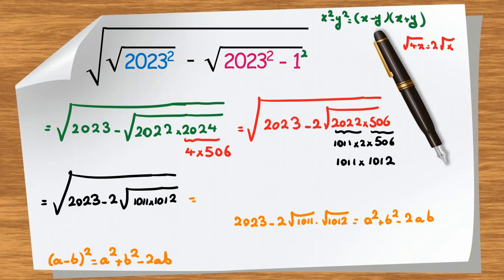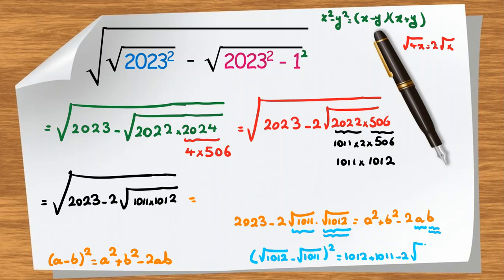Let's check: if we compute the square root of 1012 minus the square root of 1011, all squared, we get 1012 plus 1011 minus 2 times the square root of 1012 times 1011. The first part gives 2023, and the second part matches exactly. So this works.